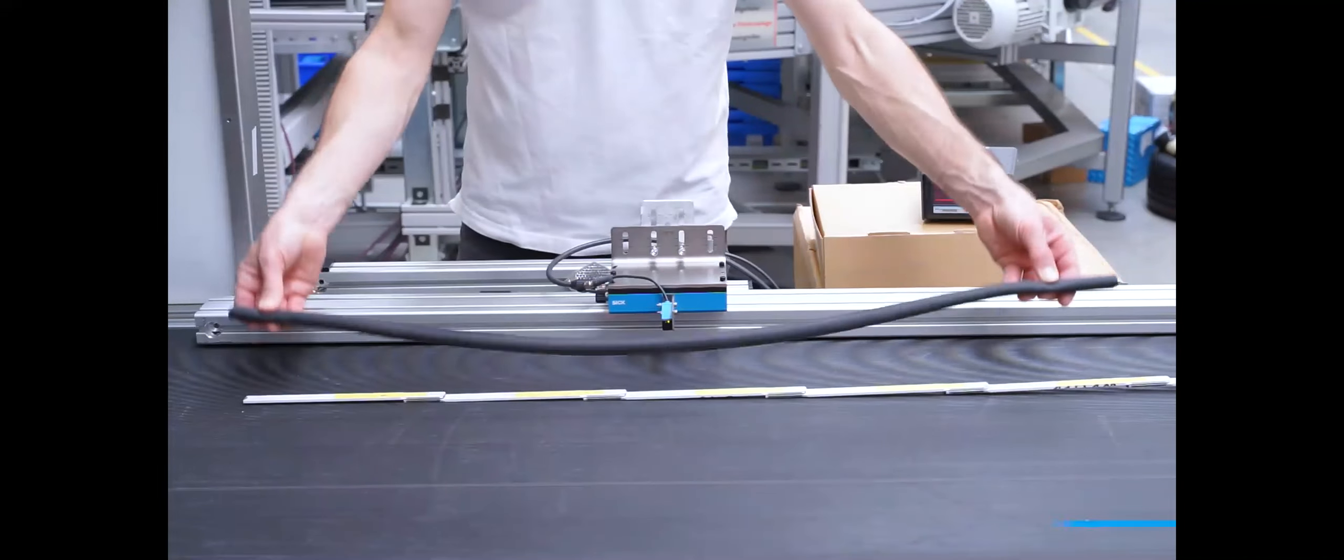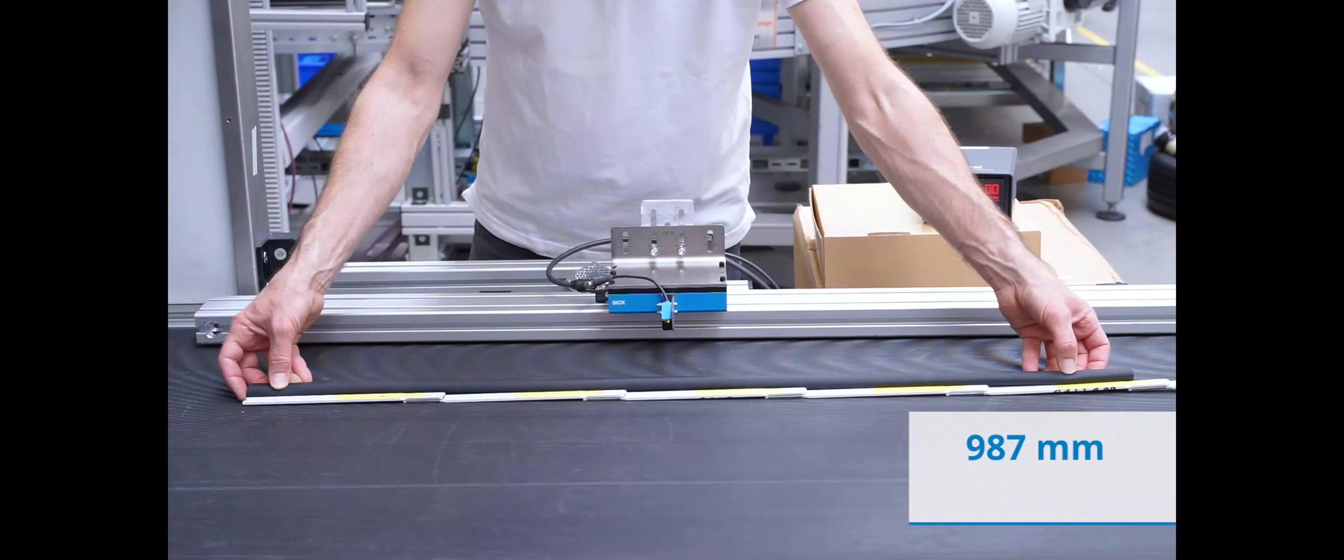Next, we will take a sample of rubber seal with a length of 987mm.